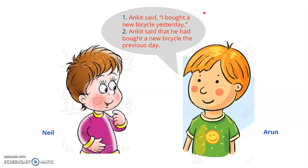In the first case, Ankit's words are put within inverted commas. The sentence inside the inverted commas starts with a capital letter, and the reporting verb 'said' is used. In the second sentence, we report what Ankit said without quoting his exact words. This is called indirect or reported speech.